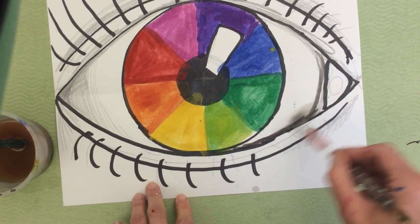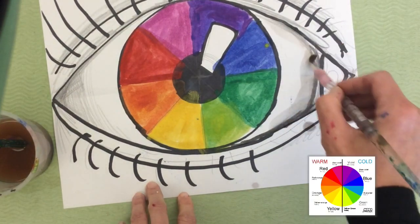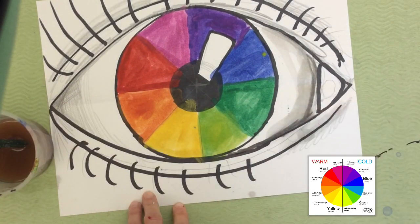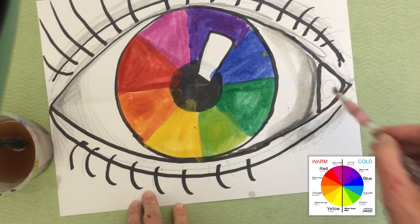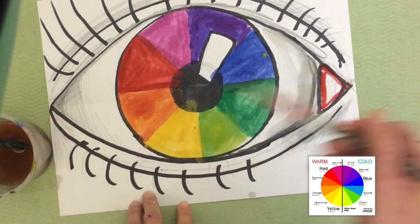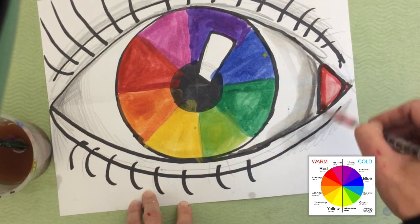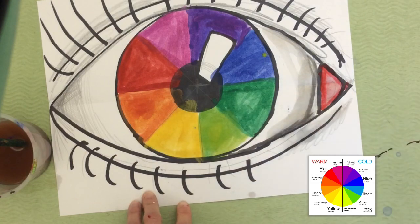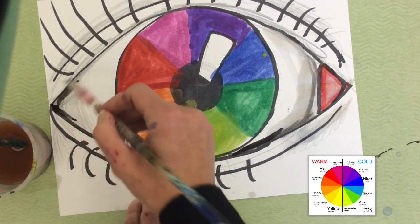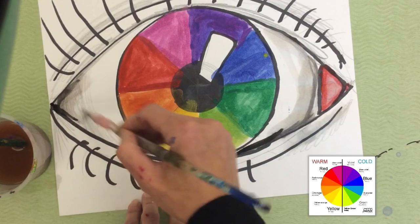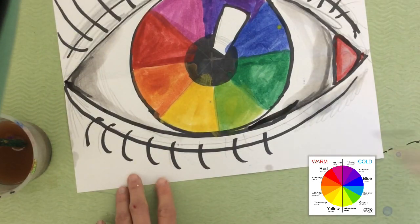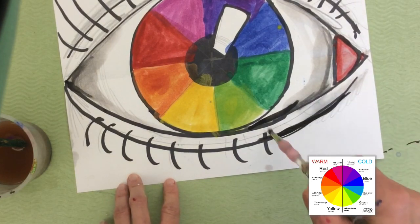Once I'm finished doing that, if you have time, you can add a little bit of value around the eye, or shadows, to make your eye look really realistic. Value is how light or dark a color is. So if you mix a little bit of water with the black paint, then you can make a gray color and paint the sides of the eyeball. If your gray is too dark, just mix your paintbrush with a little bit of water to make it lighter. So the more water you use, the lighter the color is going to be.